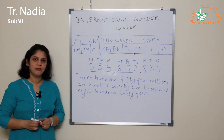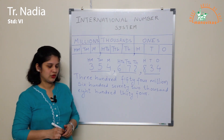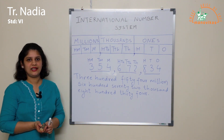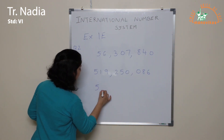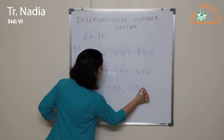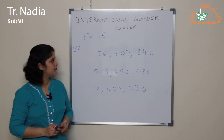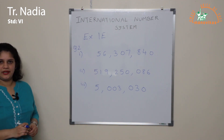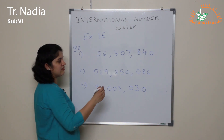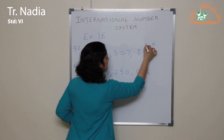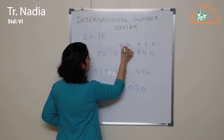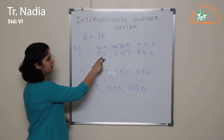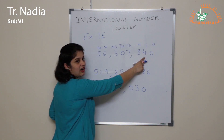Having understood this, let us now move to Exercise 1E in your textbook, beginning with question 2, where we are given numbers and asked to write the number name in the International Number System. Let us put the place value above every digit: 1's, 10's, 100's, 1000, 10,000, 100,000, million, 10 million. The first number is read as 56 million, 307,840. The second number is 590,250,086.